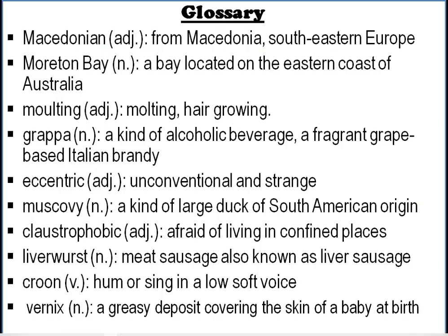Glossary: Macedonian — people from Macedonia, southeastern Europe. Moreton Bay — a bay located on the eastern coast of Australia. Malting — hair growing. Grappa — a kind of alcoholic beverage; fragrant grape-based Italian brandy. Eccentric — unconventional and strange. Muscovy — a kind of large duck of South American origin. Claustrophobic — afraid of living in confined places. Liverwurst — meat sausage, also known as liver sausage. Croon — hum or sing in a low voice, murmuring. Vernix — a greasy deposit covering the skin of a baby at birth.